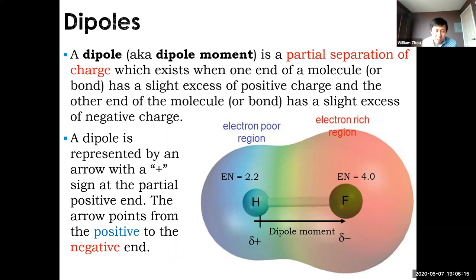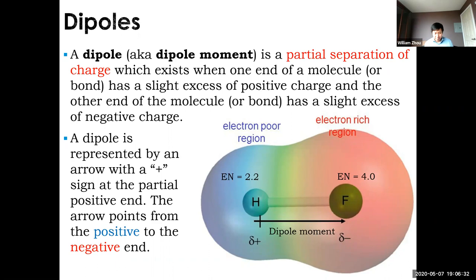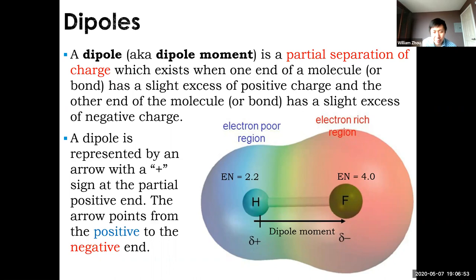Before moving on — HF: you might think it's ionic because 4 minus 2.2 equals 1.8, which exceeds 1.7. But actually, no — that's where we break the rule. HF is still polar covalent because the electrons are still shared. That system is flawed; it's just a rule of thumb. Just keep in mind, HF is still polar covalent.